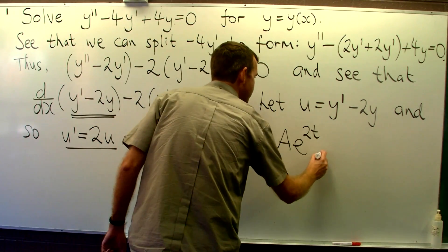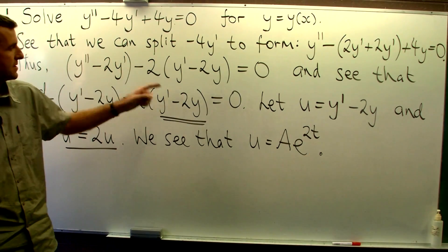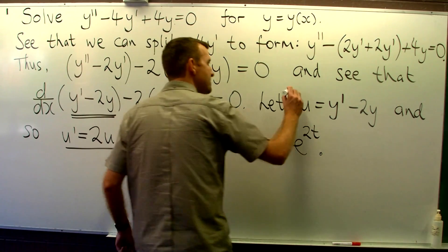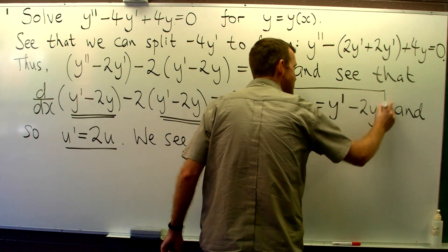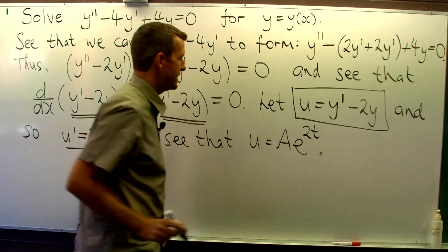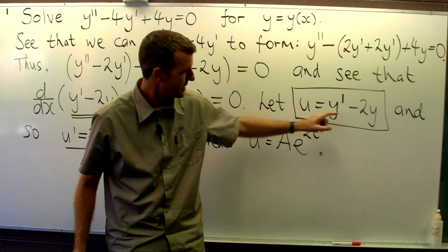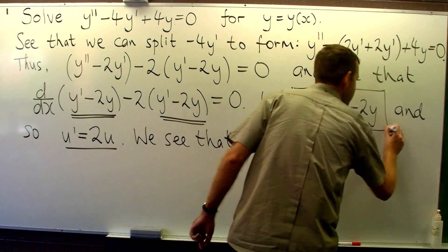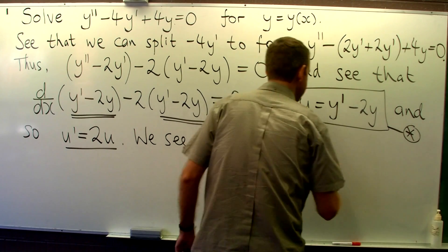You may think, well hang on, we're trying to solve for y, but here we've only got u. Well, we can now go back to our substitution, substitute in here for u, and now solve for y. Let's call this star.